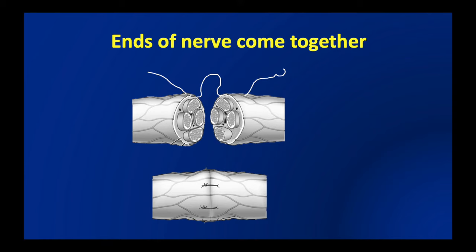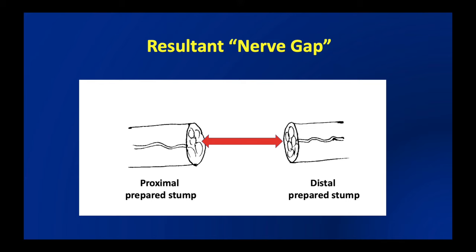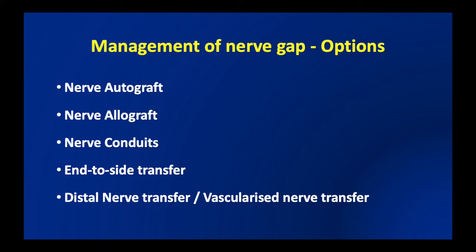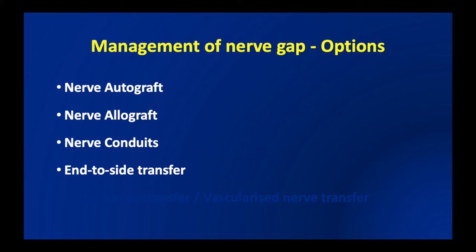When there is a nerve gap that cannot be bridged by direct repair, the commonest methods for managing nerve gaps are: nerve autograft, nerve allograft, nerve conduits, end-to-side nerve transfer, and distal nerve transfer or vascularized nerve transfer. We shall discuss all these techniques except distal nerve transfer and vascularized nerve transfer, which will be dealt with in another video.